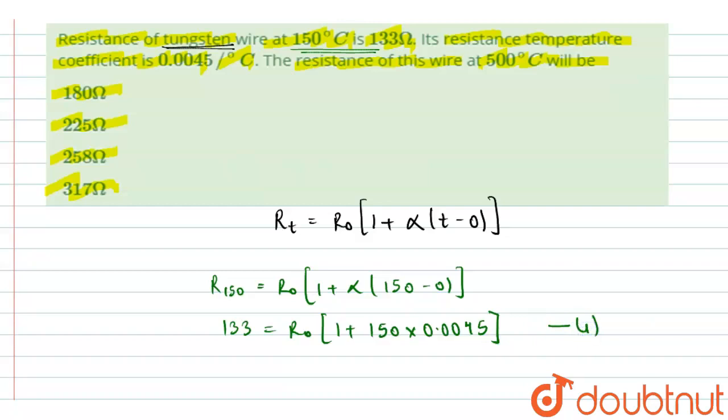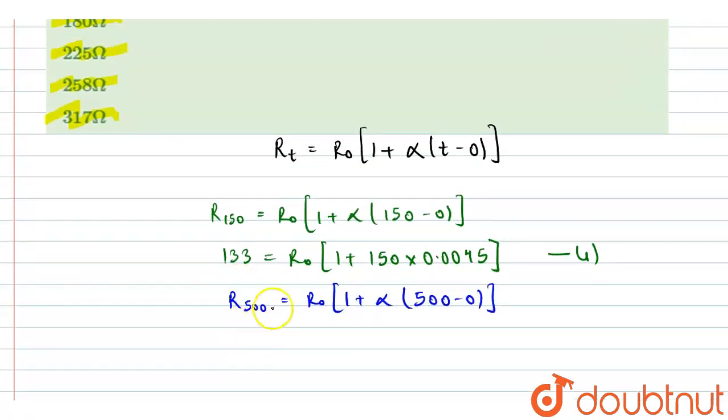And further we have for R₅₀₀, it is unknown. So let me write it: R₅₀₀ equals R₀ times 1 plus α times 500 minus 0. So let the resistance at 500 degrees Celsius be R only. So R equals R₀ times 1 plus 500 into 0.0045. Let this be equation number 2.